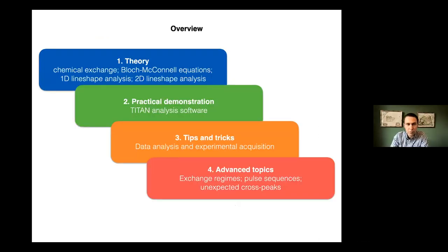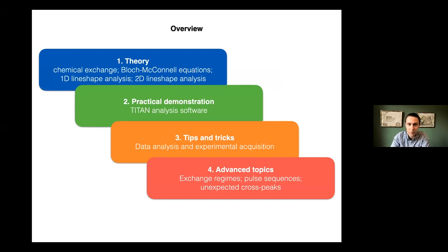The overview of today's talk: I'm going to start with some theory — some well known, some more specialist — on chemical exchange in NMR, and how we apply that to line shape analysis in 1D and 2D. We'll then pause for questions and take a look at a practical demonstration of some analysis software we put together. We'll discuss tips and tricks for both analysis and acquiring experiments, and then touch on more advanced topics if time allows.